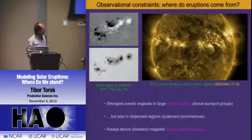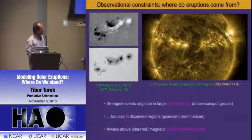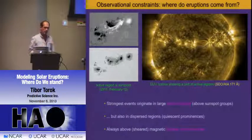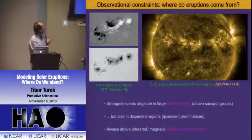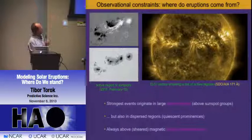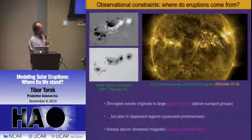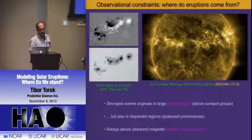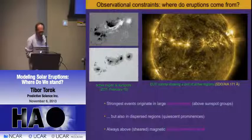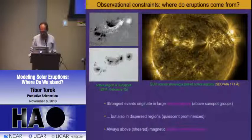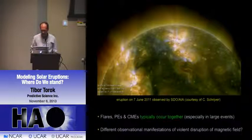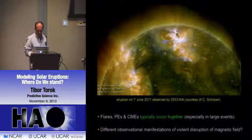One thing we also note is that eruptions always seem to occur about polarity inversion lines of the magnetic field—where field coming out and field going in to the sun meet. That's what we call the neutral line or polarity inversion line, and eruptions always come from these places, even for quiet-sun eruptions.